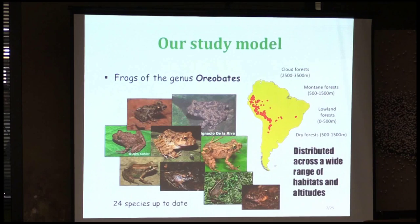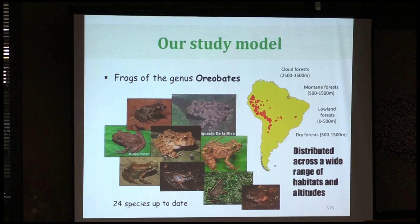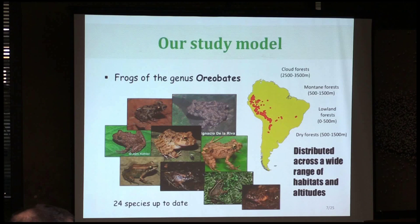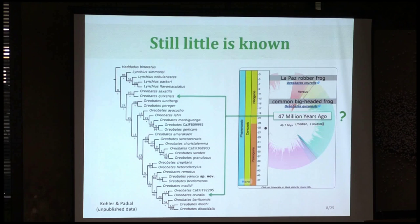Our study model is a genus of frogs called Oriobates, which is currently composed of 24 species. The good thing about these frogs — they're all brown, not very flashy — but they are distributed across a wide range of habitats and altitudes. You can find them in cloud forest, mountain forest, lowland forest, and dry forest, all in South America. There are some existing trees, but these were made with only one or two genes, so I don't trust them that much.